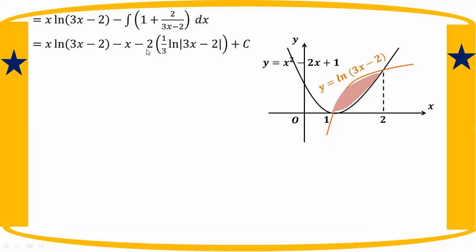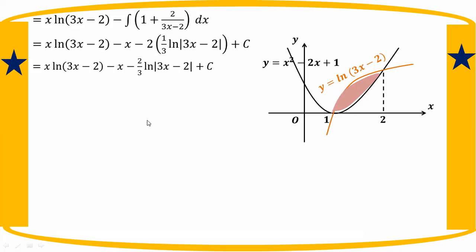For 3h minus 2, the integral of ln modulo (3h minus 2) involves 1 minus 1/3 terms, repeated through the integration by parts expansion.